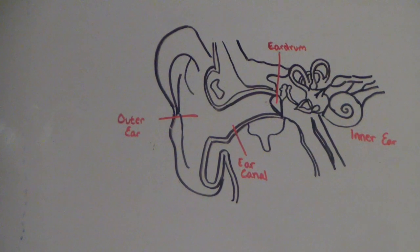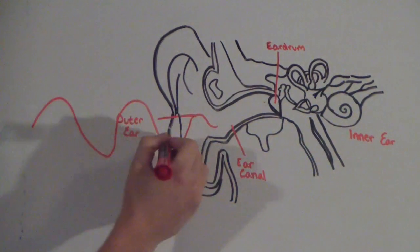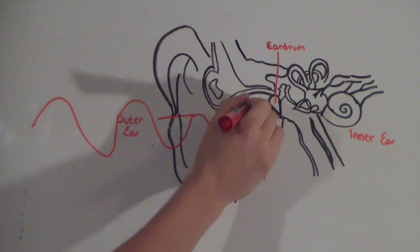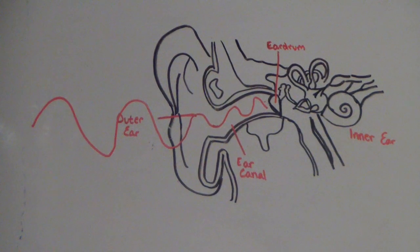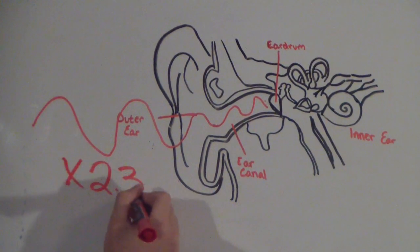So how do we perceive these vibrations into sound? Sound waves travel through our ear, initially hitting the outer ear, then traveling through the ear canal until it hits the eardrum. When sound waves hit the eardrum, they are amplified by 2.3 decibels.